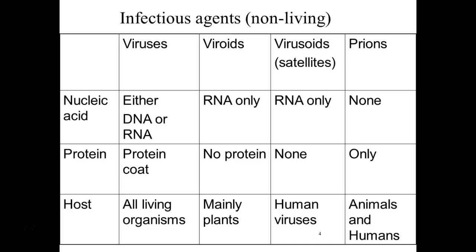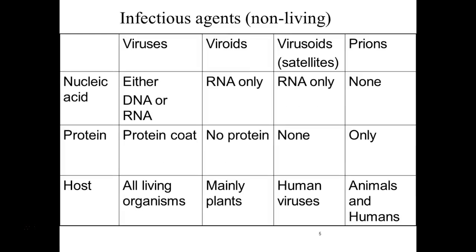Viroids are unable to replicate themselves — just like viruses, they rely on the cell to copy them. They're believed to be replicated by an RNA polymerase, meaning it makes RNA, but this is a special one that doesn't need DNA to make RNA — it's an enzyme that can attach to RNA and make more RNA. Viroids infect plants, so this is not something we have to worry about in ourselves. They believe it's a rolling circle mechanism, similar to how bacteria copy their DNA.